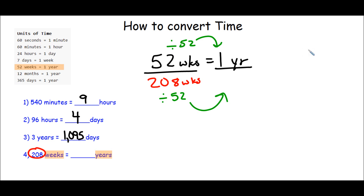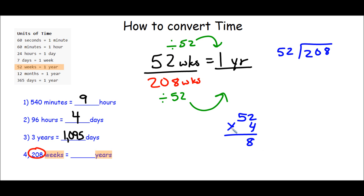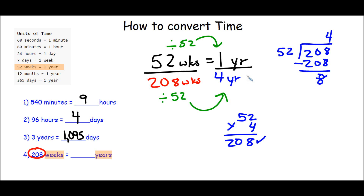Let's go ahead and work that out on the right. We have 208 being divided by 52. Let's estimate again: 52 is very close to 50, and 208 is close to 200. I know that 50 goes into 200 four times. Let's check: 4 times 2 is 8, and 4 times 5 is 20 — that's why it's a good idea to estimate. So 52 goes into 208 four times, which means 208 weeks equals 4 years.